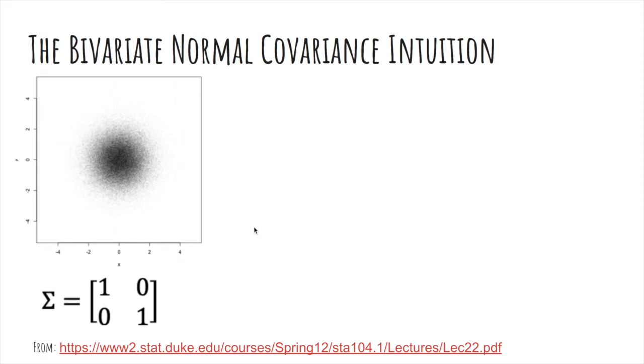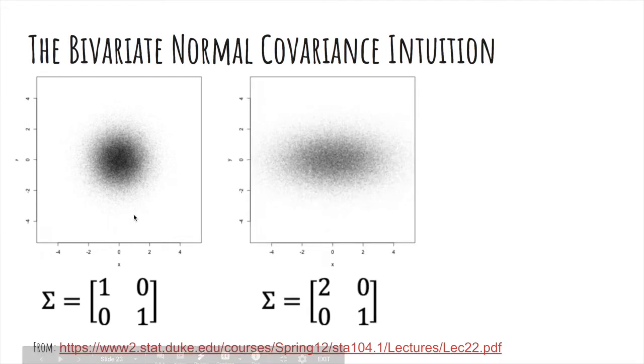So let's see what this covariance matrix actually does. So let's look at the identity covariance matrix. They have the same variance 1 and no correlation. These are samples from a bivariate normal. It looks like this. If I change the variance on the X to be a bit bigger, then you'll get a stretch in the X direction.